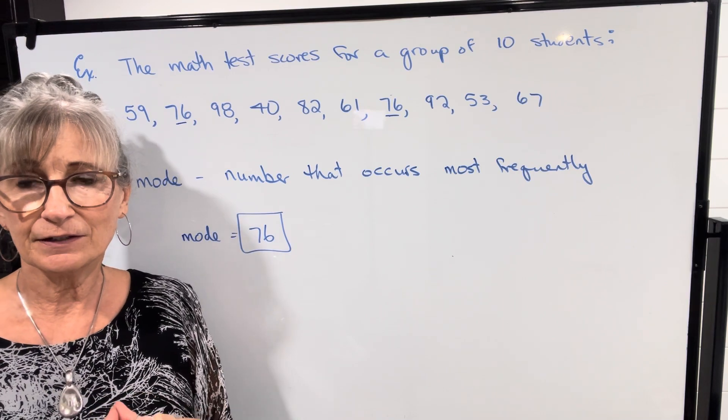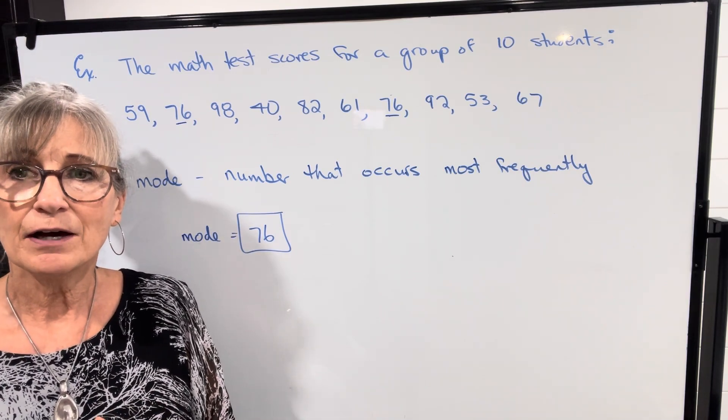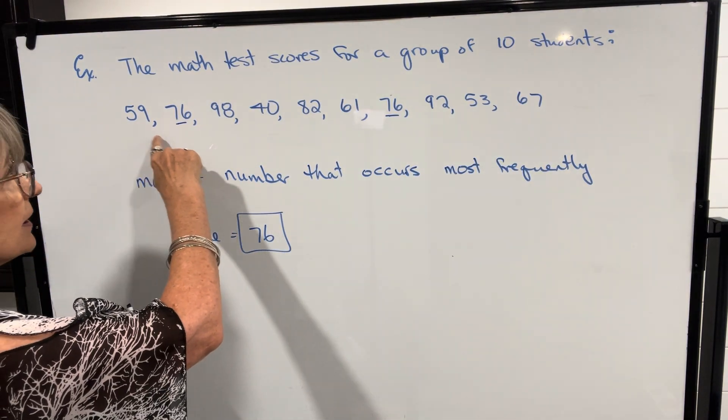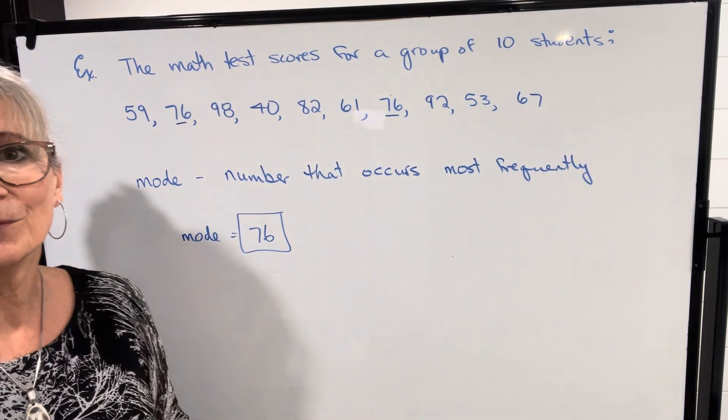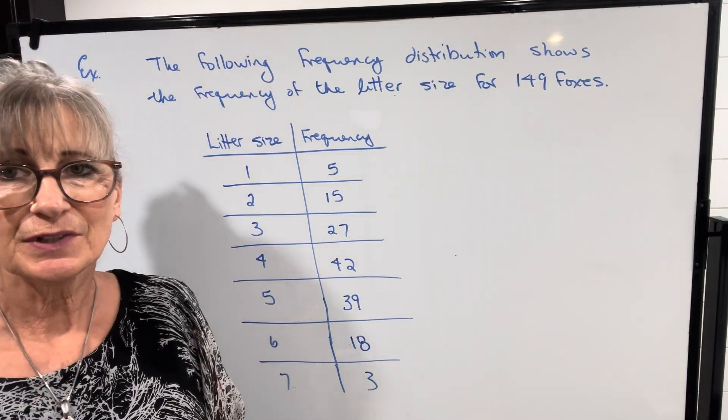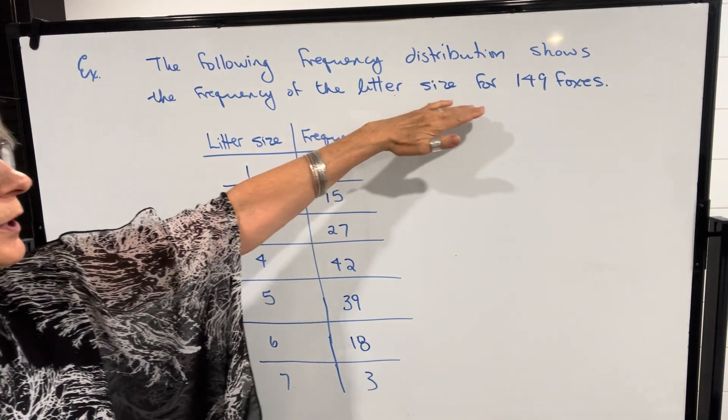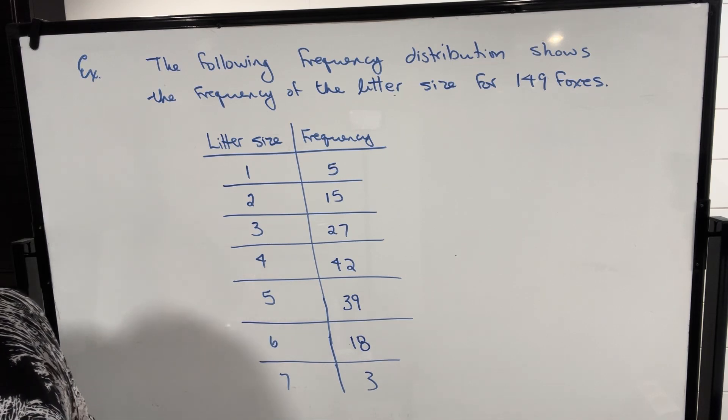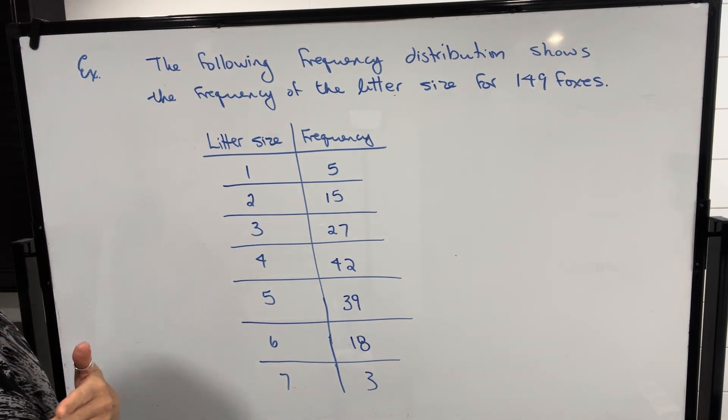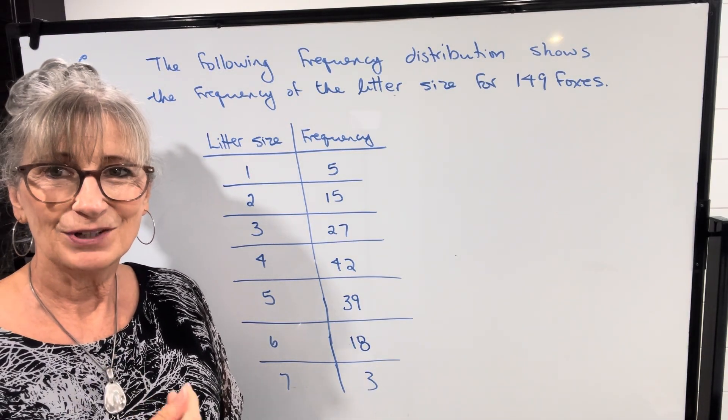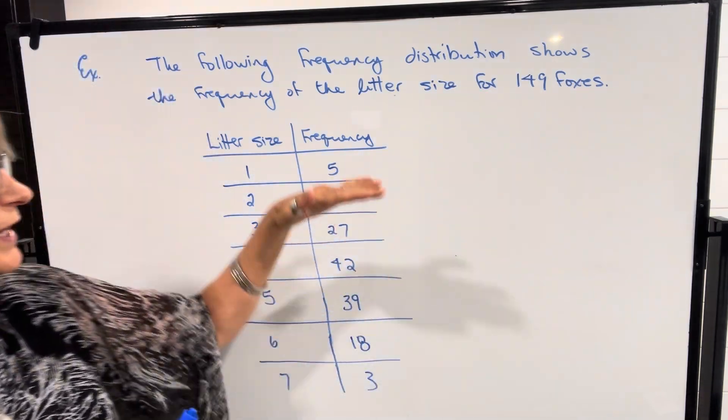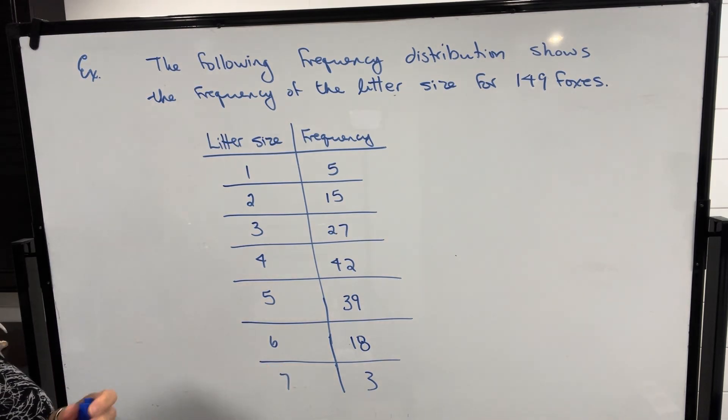Next, I want to take a look at finding these three measures of central tendency when we have data arranged in a frequency distribution rather than single values like they were in this example. In our next example, we have data for 149 foxes. Let's say there are female foxes in a certain region and a biologist wanted to know the litter size for each of those females. So rather than writing down each of those litter sizes, there'd be 149 numbers to work with.